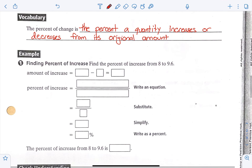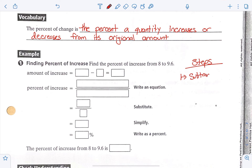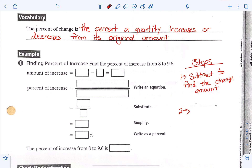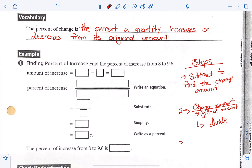So we're going to put some steps on the side. Step one: subtract to find the change amount — you're going to subtract to figure out how much it has changed. Then you're going to make a fraction where you have the change amount over the original amount, and then you're going to divide that. And then step three, you're going to turn it to a percent, which means we're going to times it by 100.